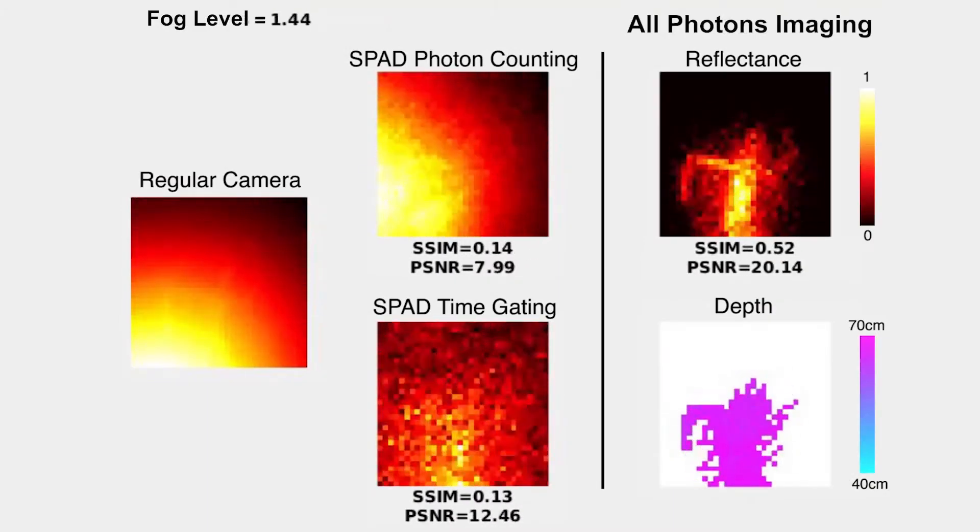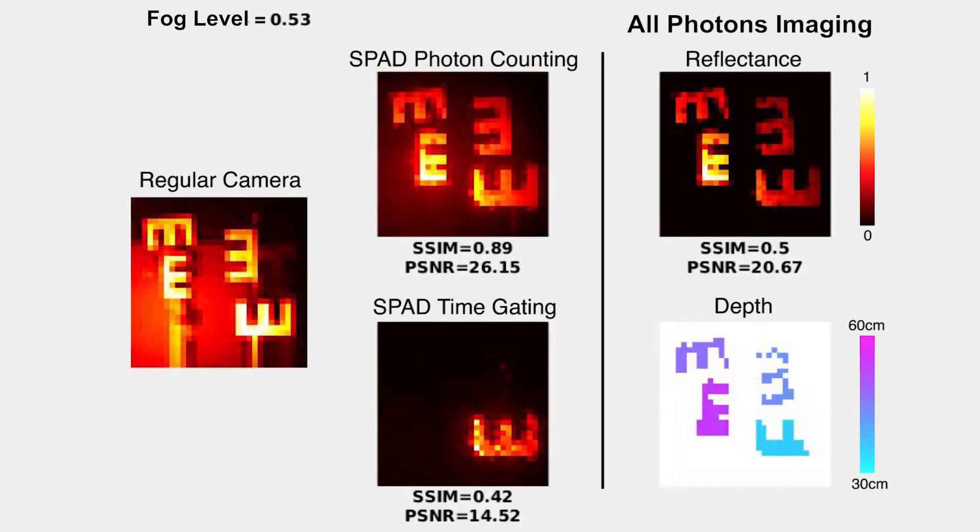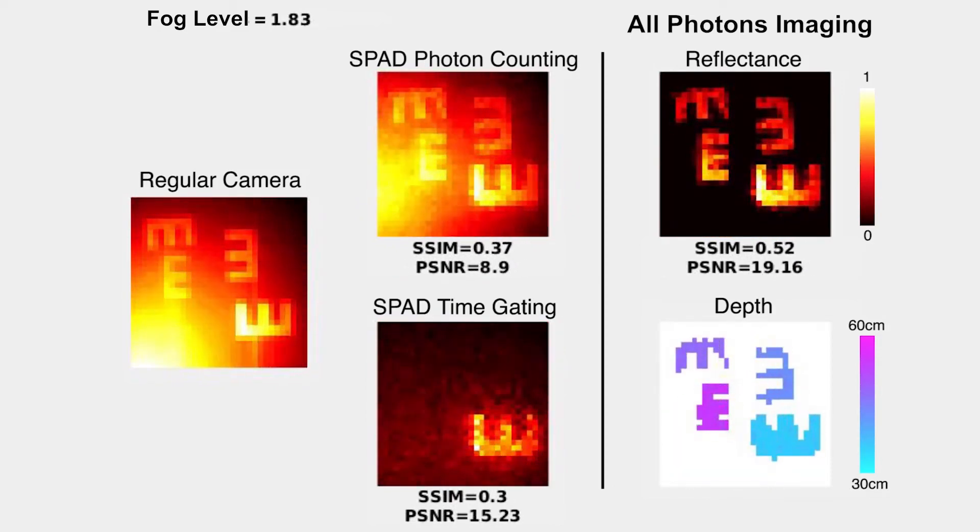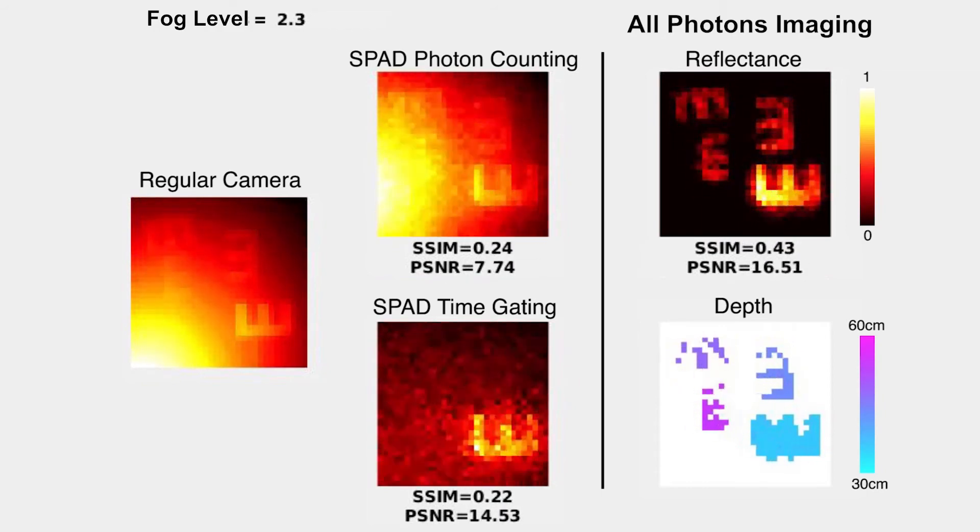On the left are other methods. And on the right is all-photons imaging, recovering the target depth map and a photo, demonstrating more than six times better contrast.